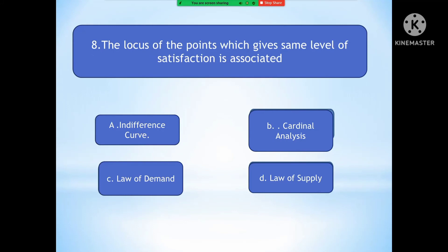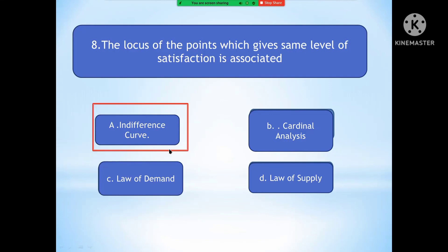Question number eight: The locus of the points which gives the same level of satisfaction is associated with? Option A is Indifference Curve. Option B is Cardinal Analysis. Option C is Law of Demand. Option D is Law of Supply. The right answer is Indifference Curve.